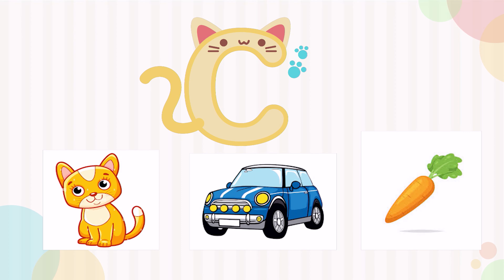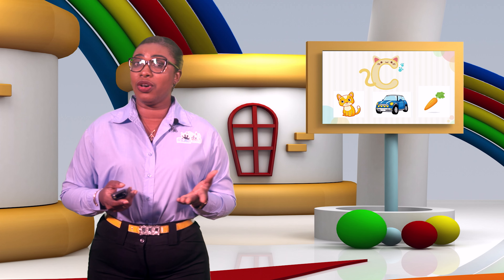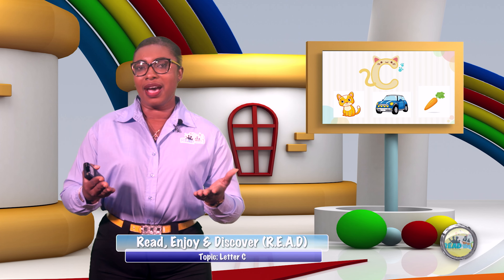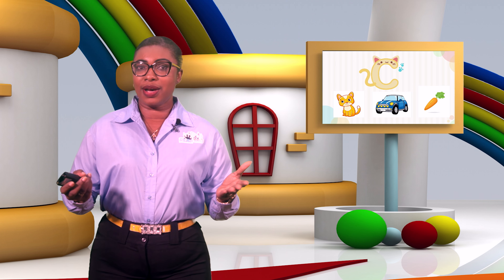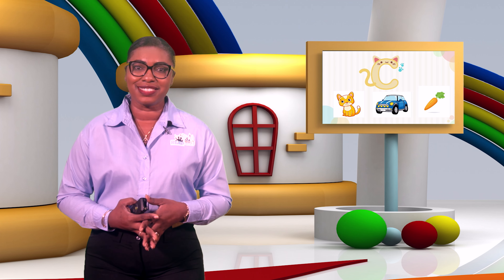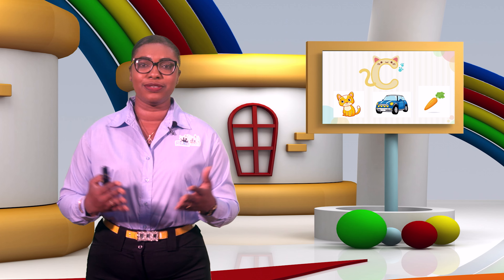Let's say those names again — we have 'cat,' 'car,' and 'carrot.' Do you know any other word that begins with the letter C? I'm sure you do. Now, before we go further, we know what our letter C looks like and the sound it makes, so let's try to write the letter C. Grab your book and grab your pencil as we practice writing our letter for today.